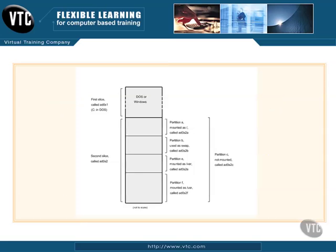Here we have a small diagram from the FreeBSD documentation on the BSD site. You can see that this disk is divided up into several slices. The first slice — in BSD we have AD0, which is an ATA or IDE drive — is called AD0, and the first slice is S1 for slice 1. This slice is dedicated to DOS or Windows; it could be a FAT partition or an NTFS partition.